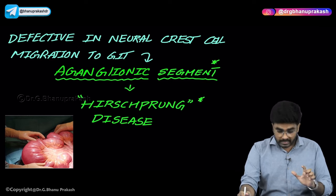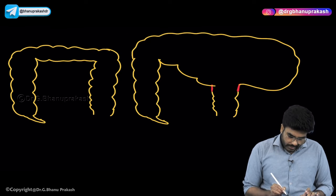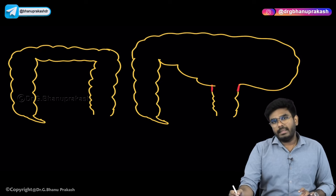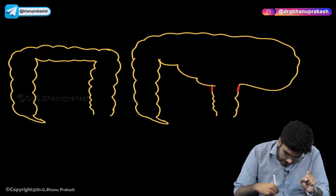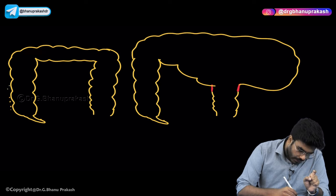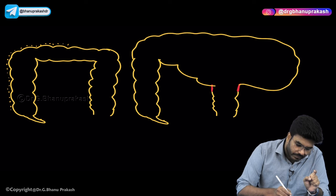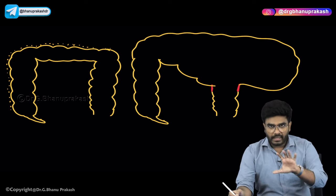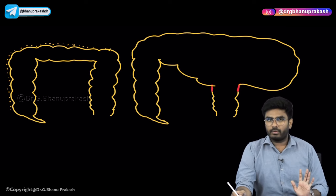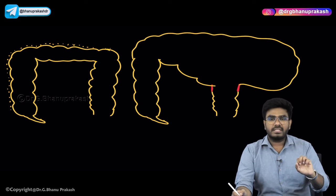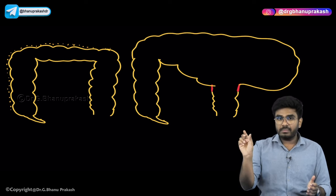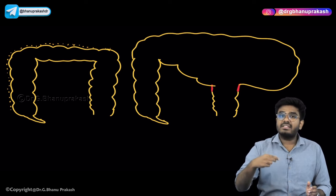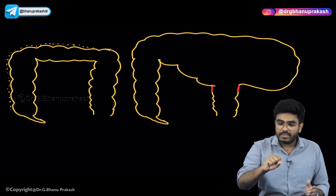Now, from where did these neurons come? Normally there are cells called neural crest cells. Neural crest cells have migrated and settled in the GI tract. The neural crest cells from the central nervous system migrate during the development of the baby, and these neural crest cells came to the GIT and in the GIT they form the enteric nervous system, which helps in GI peristalsis.